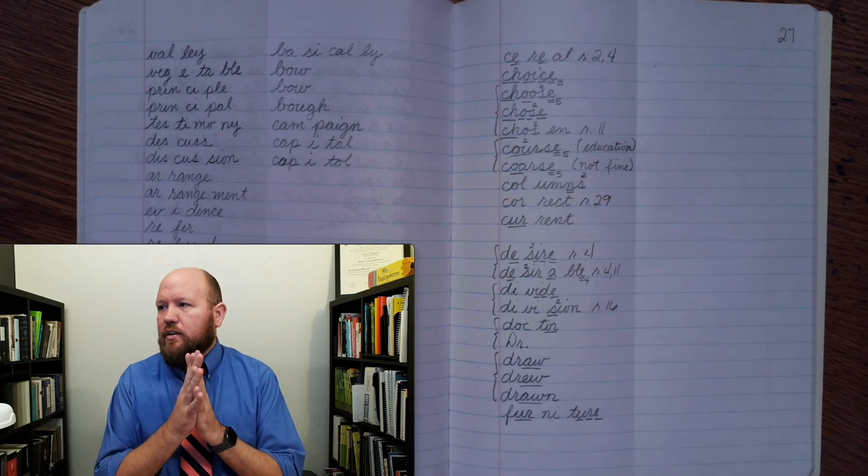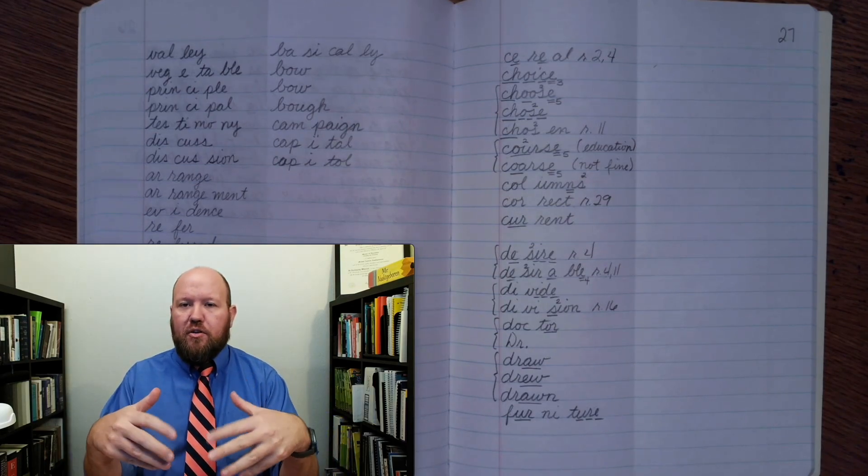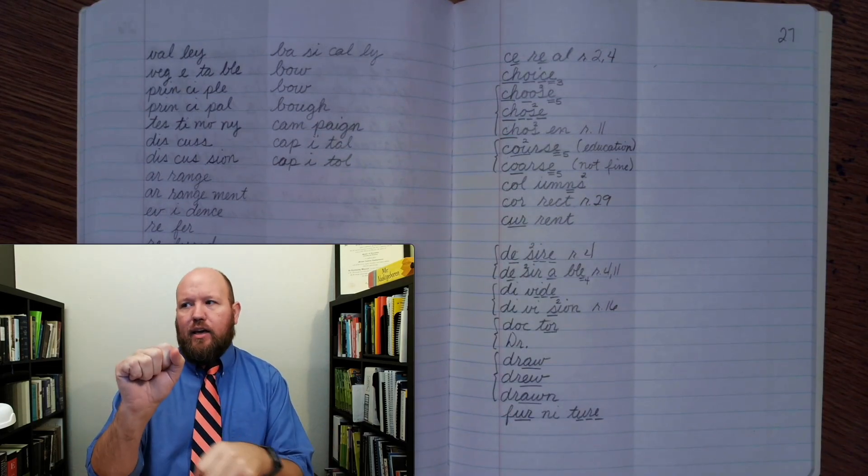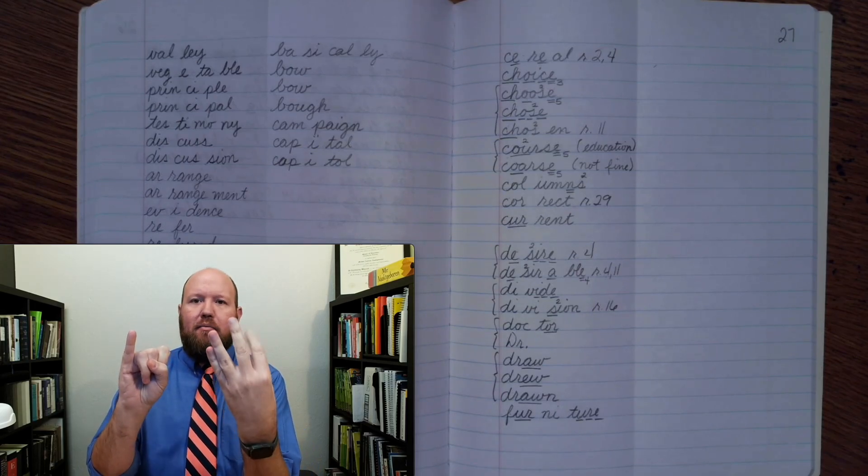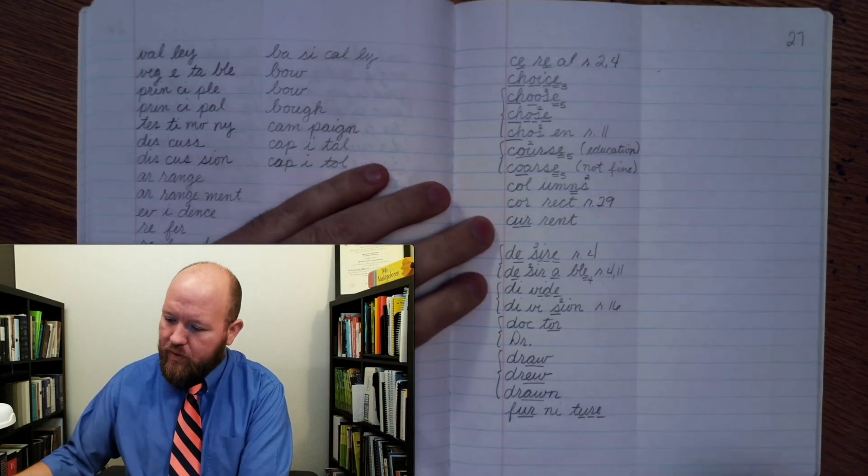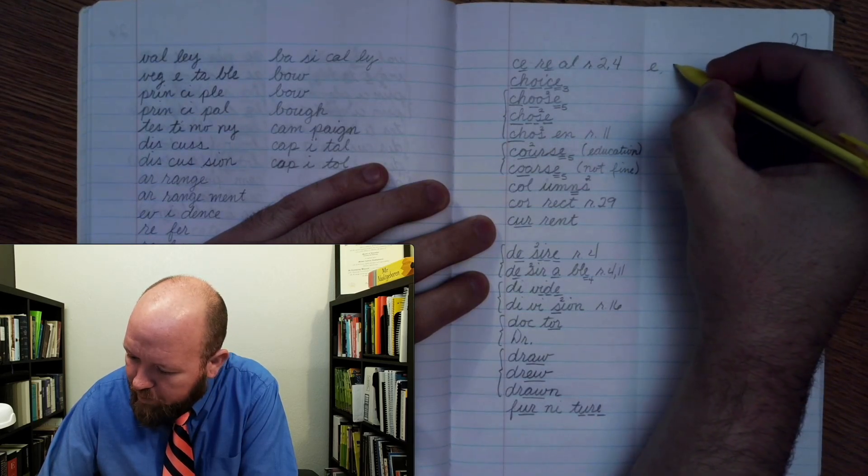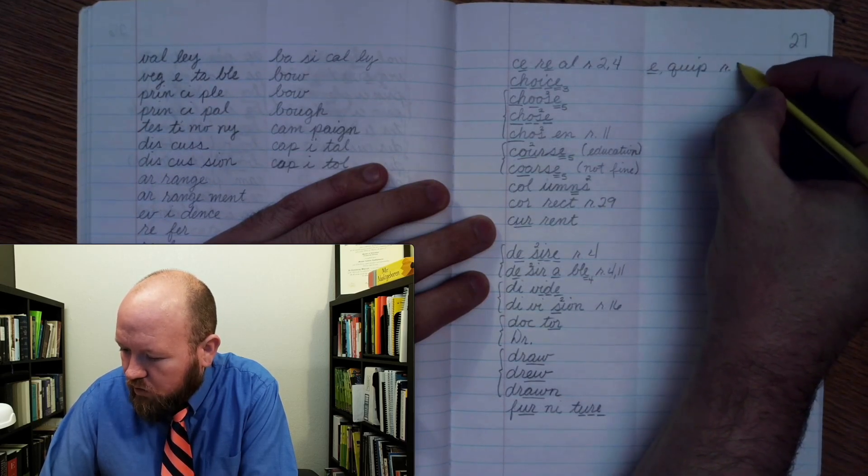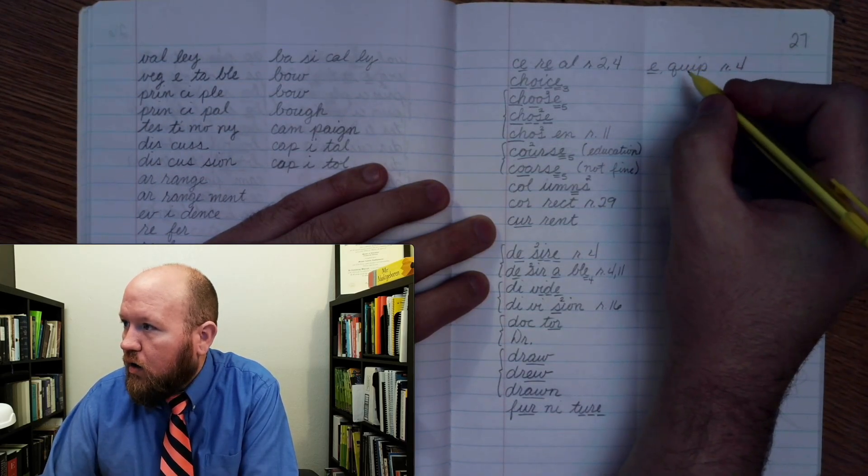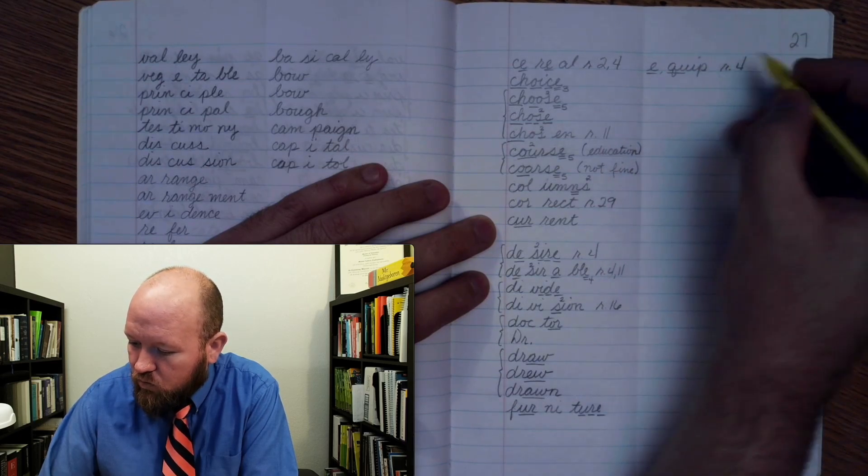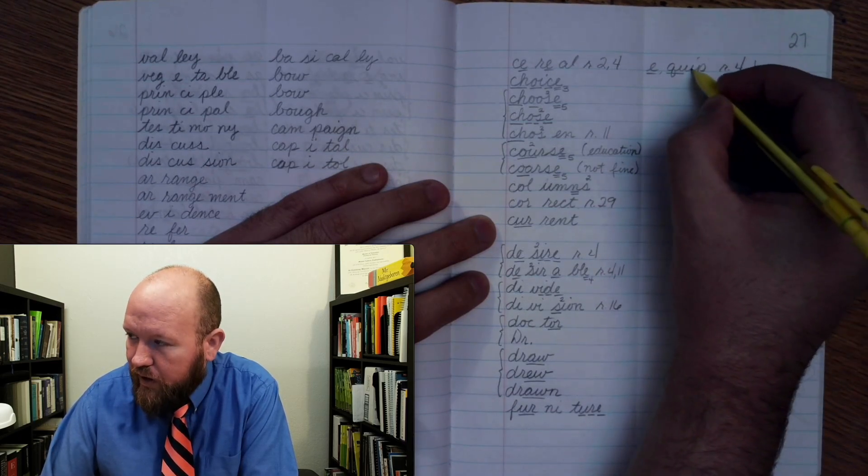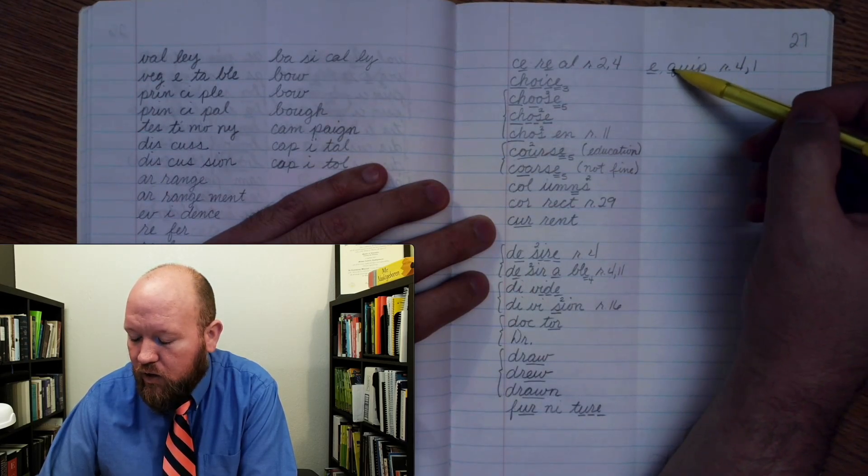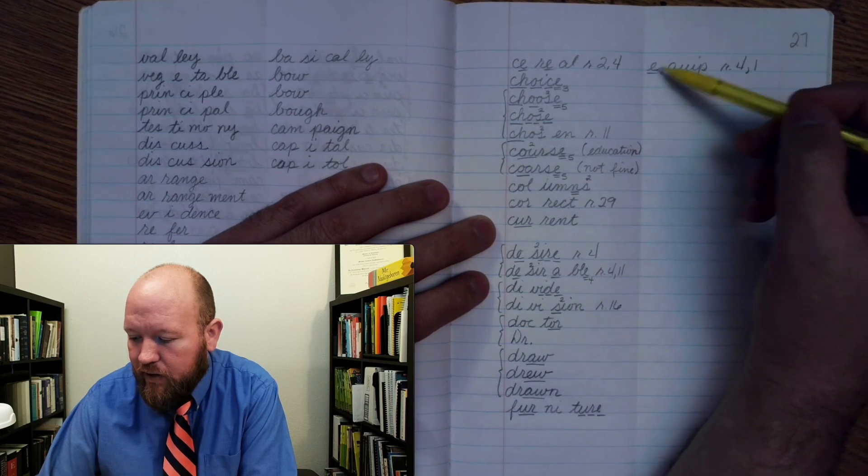The first word is the word equip. So I'm going to equip you so that you can do what you need to do. Equip, base word equip. E once, rule four. Q U once, rule two, rule one. Equip. And rule one, U always has to follow a Q in English words. Rule four, U may say E at the end of a syllable.